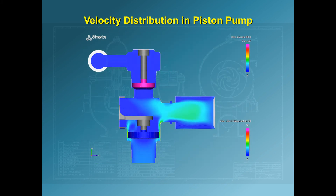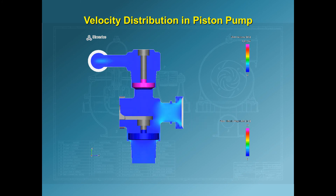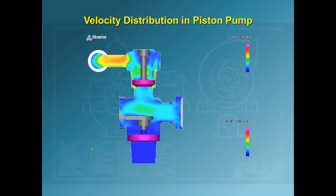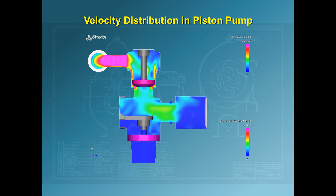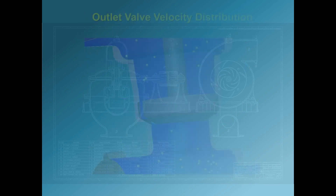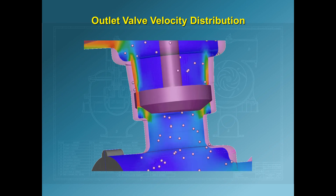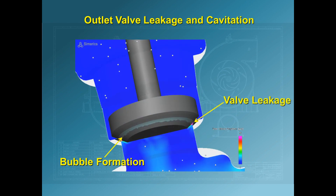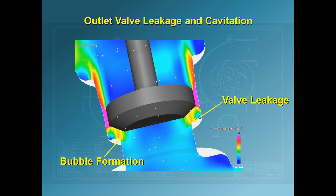Here is the velocity distribution. Notice the fluid jetting past the valves as they open. In this simulation, the inlet valve is modeled as if it closed perfectly, but the outlet valve was intentionally made to close only partially, which is a realistic effect. This is a close-up of the velocity distribution near the outlet valve. When the outlet valve closes, fluid leaks downward, causing the pressure to drop and bubbles to form.